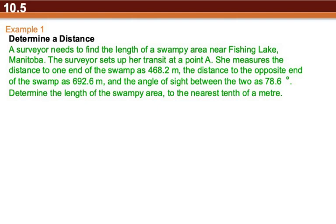What we know is we have a surveyor trying to find the length of a swamp, sets up a transit, which is just a tool used for measuring distances. She measures the distance to one end of the swamp as 468.2 meters, distance to the opposite end as 692.6, and the angle between the two is 78.6. We need to determine the length of the swamp.